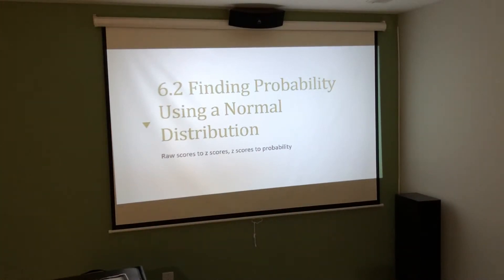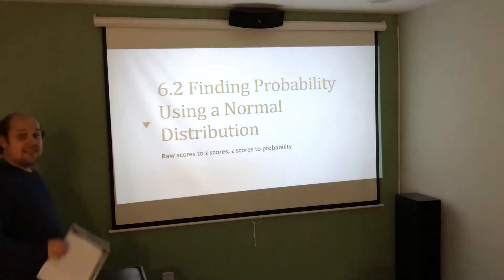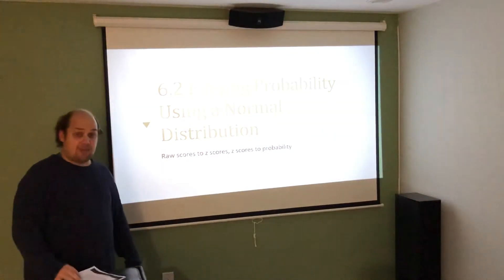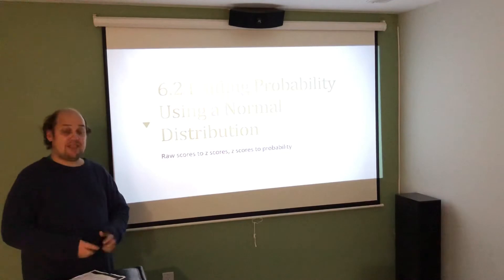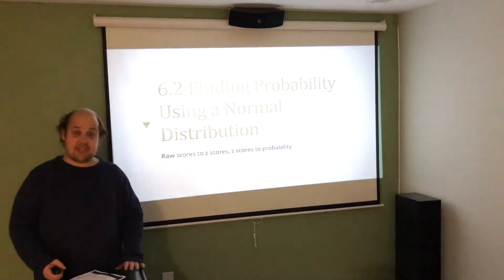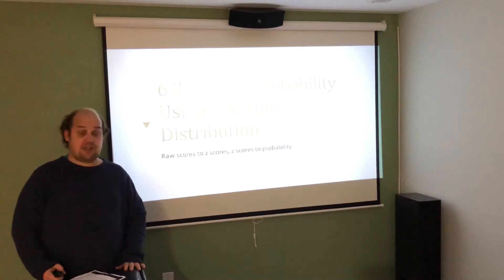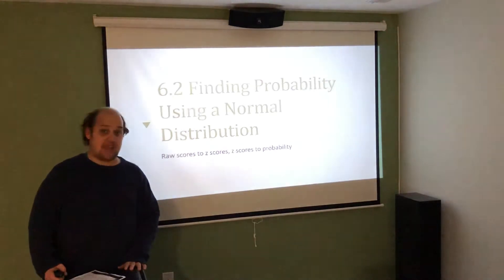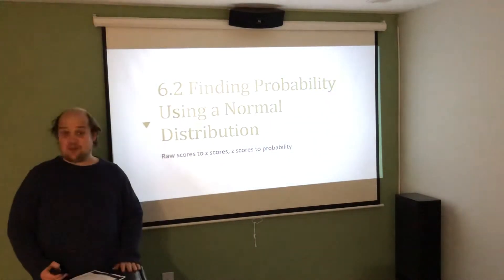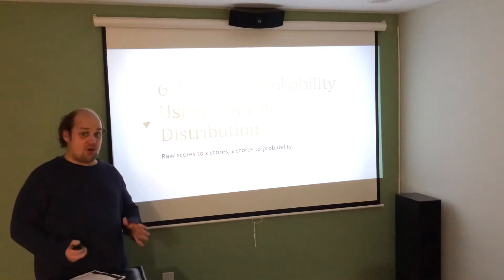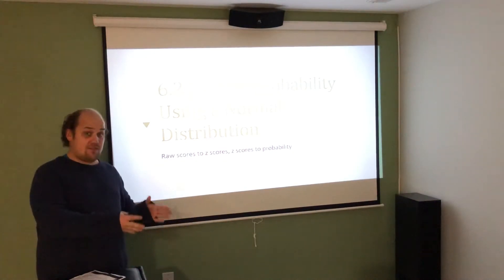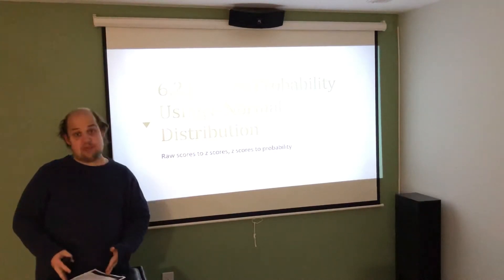In part two of our exploration of the normal table, we're still going to be using this table. The problem is that we're not going to originally know what the z-score is. Instead, we're going to be given means and standard deviations and asked to calculate a z-score for a specific x-value. So what's really going on here is we're going to have to start with raw values from the distribution. We're going to have to translate them into something the table can read using z-scores.